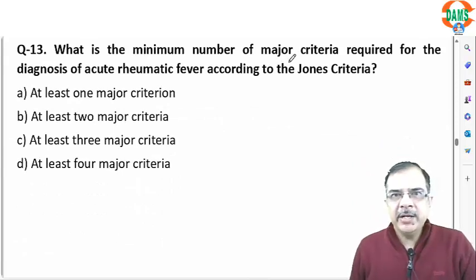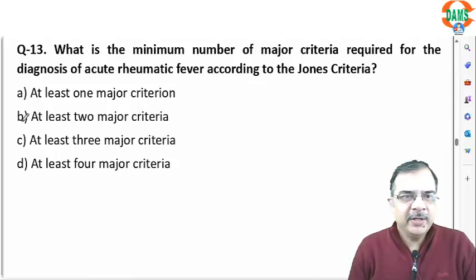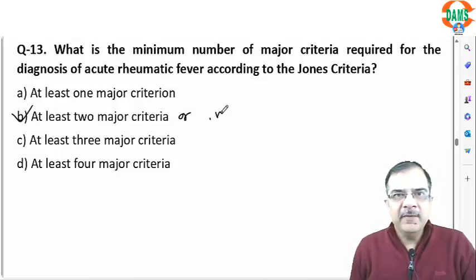The minimum major criteria required for diagnosis of rheumatic fever is at least two major criteria, or one major plus two minor criteria.